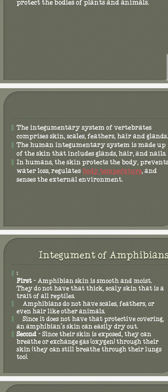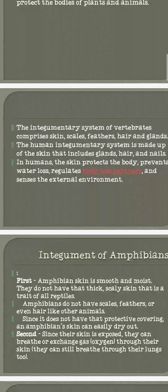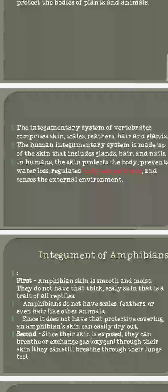Some living organisms have scales on their outer covering — like snakes. Others have feathers, like birds. And some animals, such as humans, have hair covering their skin. There are also glands present in the skin of living organisms that produce different secretions.